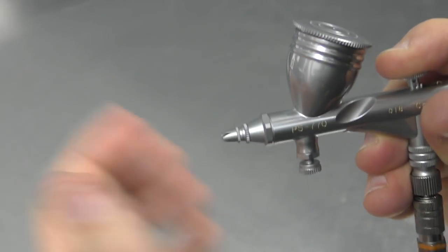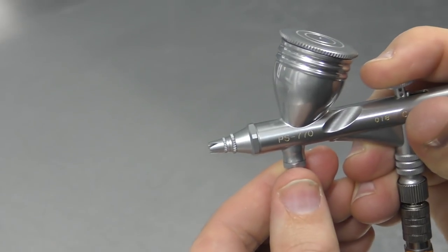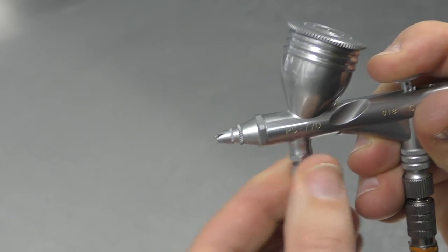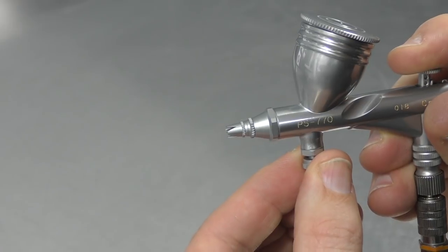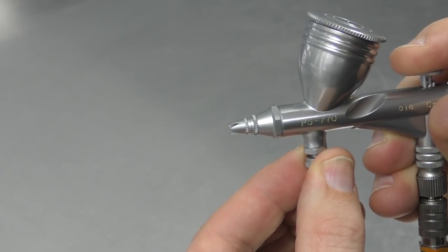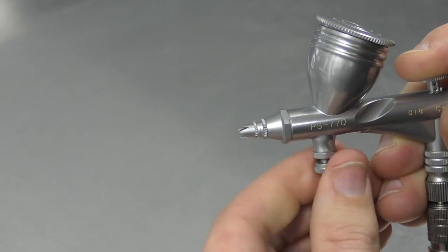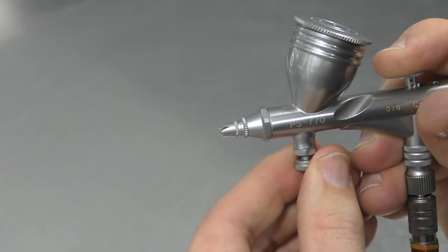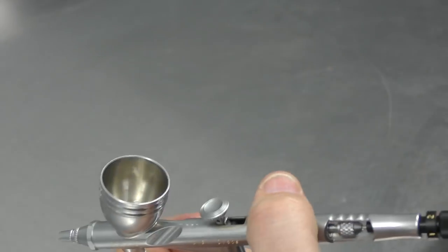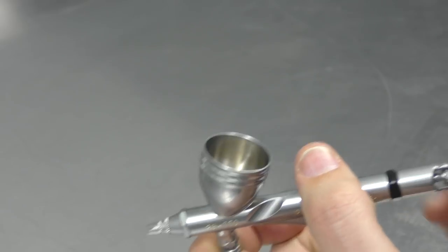So when I wind it out, reasonable amount of spray. And then if I wind it right in, you'll see I'm getting less mist when I'm pulling back. And you can hear the air pressure change. Alright. So I'll just keep it at that at the moment. We'll pop some paint in there and give her a whirl.